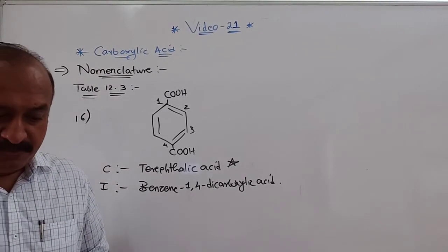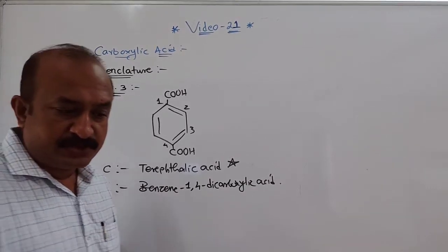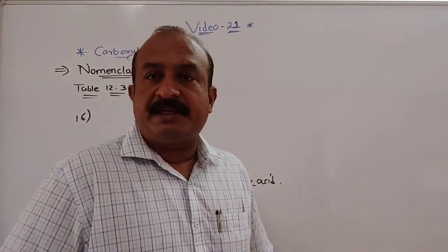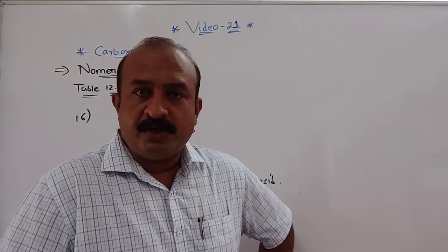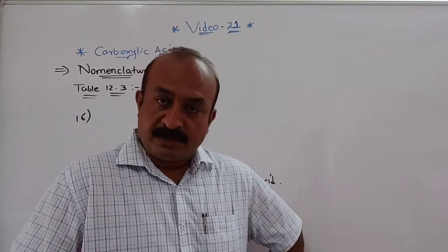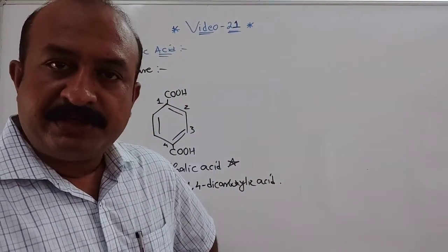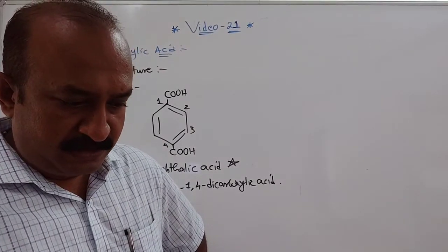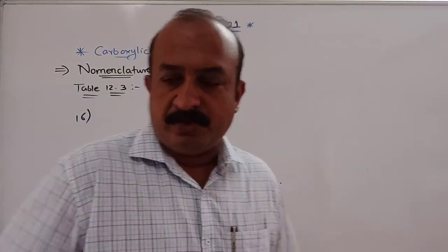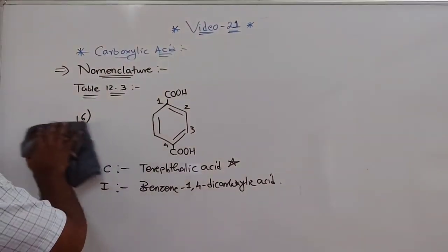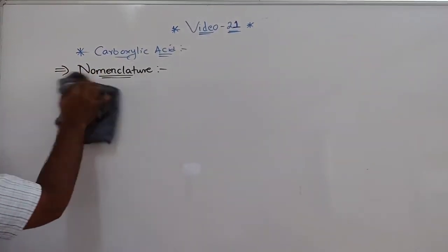In your exercise, in-text question 12.6 is there on page number 375. You have to do it by yourself. I will be giving the answers — actually, we can finish it here, so we will go through in-text question 12.6. The whole nomenclature part is now over.